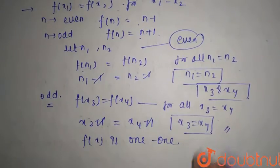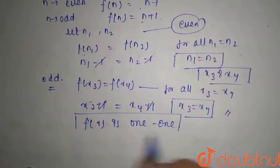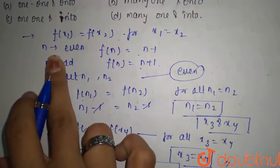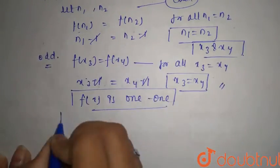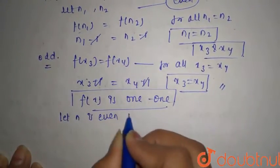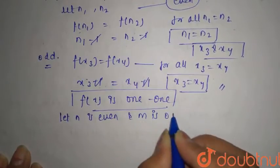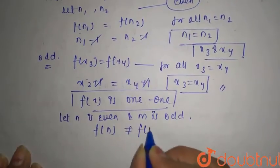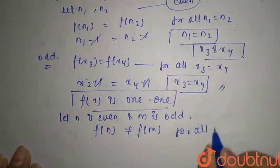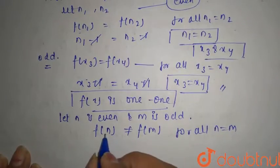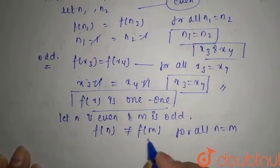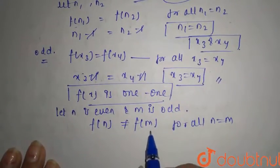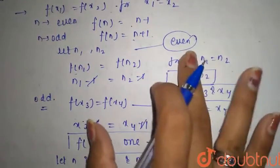So f is a one-one function. But now consider the cross case: if n is even and m is odd, then f(n) should not equal f(m) for n equals m to hold. One gives n minus 1 and the other gives n plus 1, so that is not possible. Therefore, it is only possible when both numbers are even or both are odd.